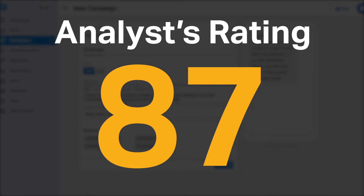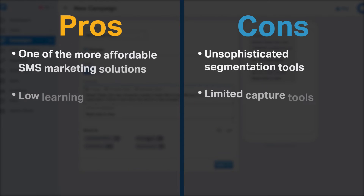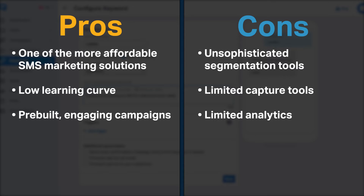Software Pundit gave Simple Texting an analyst rating of 87 out of 100, and it is currently ranked third in our SMS marketing software category. Simple Texting is one of the more affordable SMS marketing solutions, and its learning curve is very accessible for businesses new to SMS marketing.